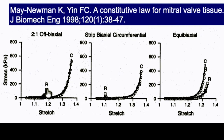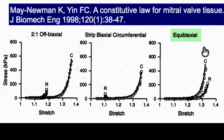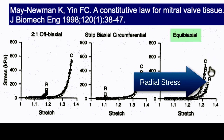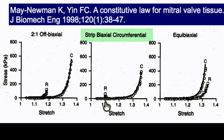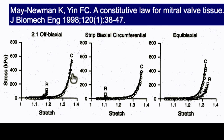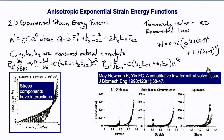In equibiaxial mechanical tests — stretching equally in both directions — more stress was required in the circumferential direction than the radial direction, indicating more collagen oriented circumferentially, hence higher circumferential stiffness. In an off-biaxial test, the radial strain was maintained at half the circumferential strain value; in a strip-biaxial test, the radial strain was held fixed and circumferential strain adjusted. The solid lines represent the fit of stresses derived from this strain energy function to those experimental data — a remarkably good match to complex experimental results using a constitutive law with only three coefficients.